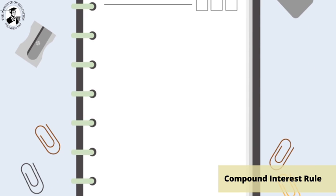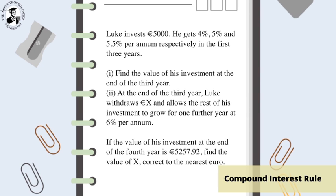Here is an example. Luke invests 5,000 euro. He gets 4%, 5%, and 5.5% per annum, respectively, in the first three years. Part 1: Find the value of his investment at the end of the third year.